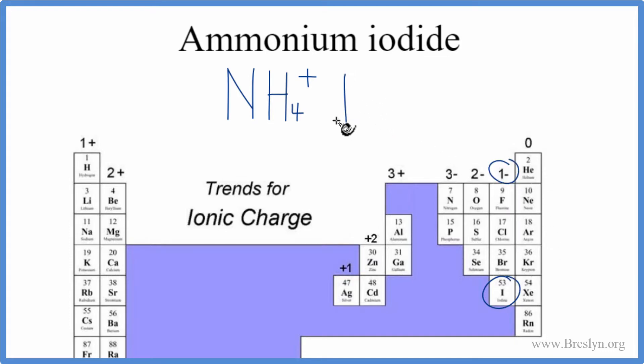So we have iodine, that I right there, and minus. So the overall charge, that should add up to zero. We should have a net charge of zero. We have a positive and a minus. That adds up to zero.